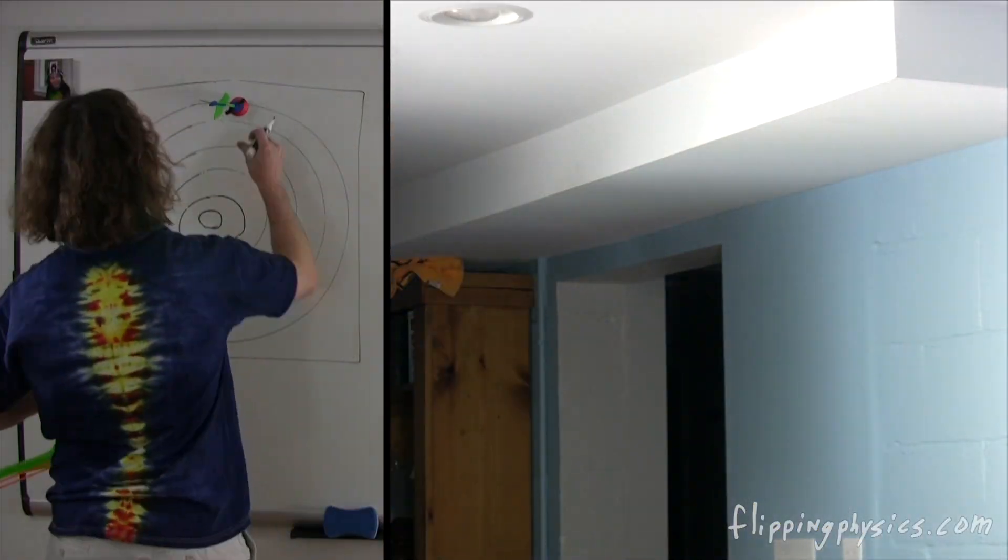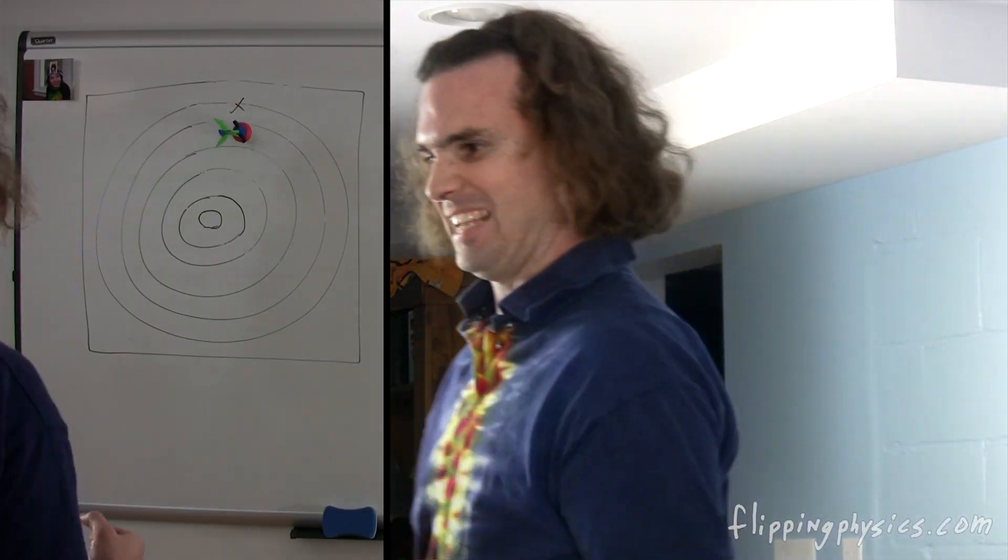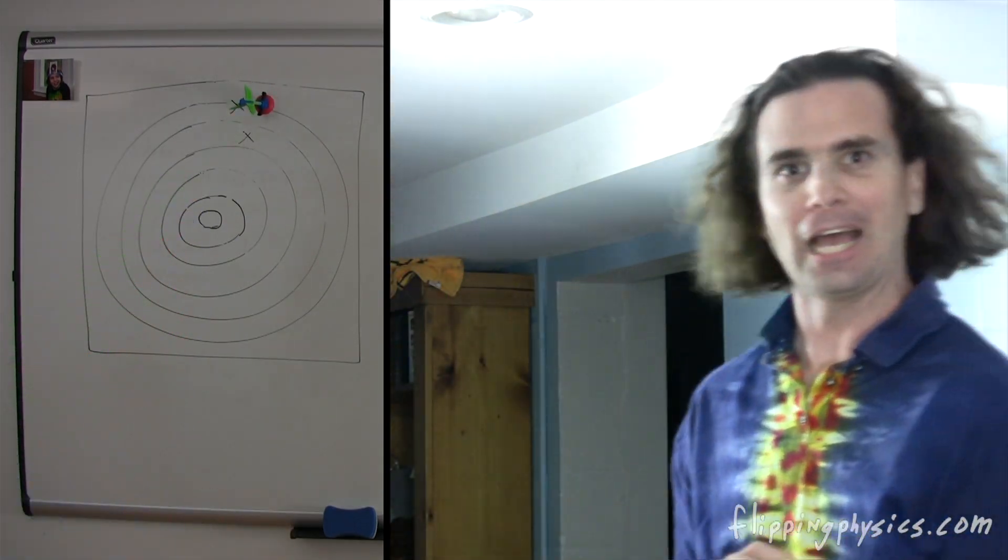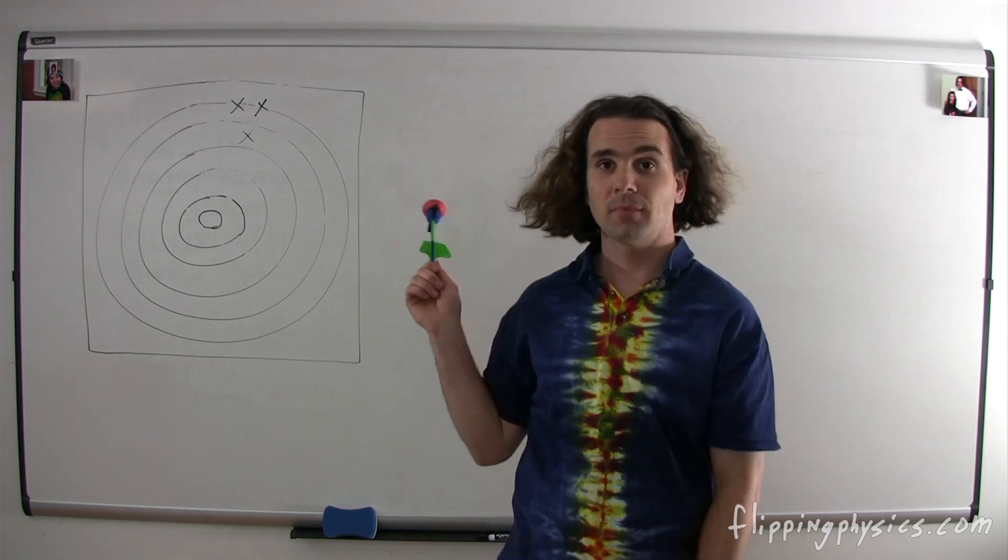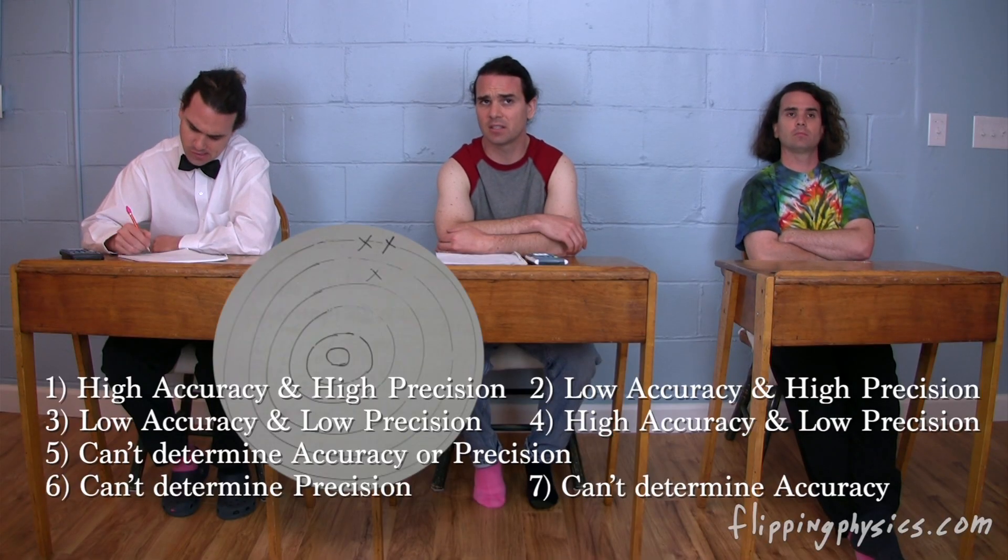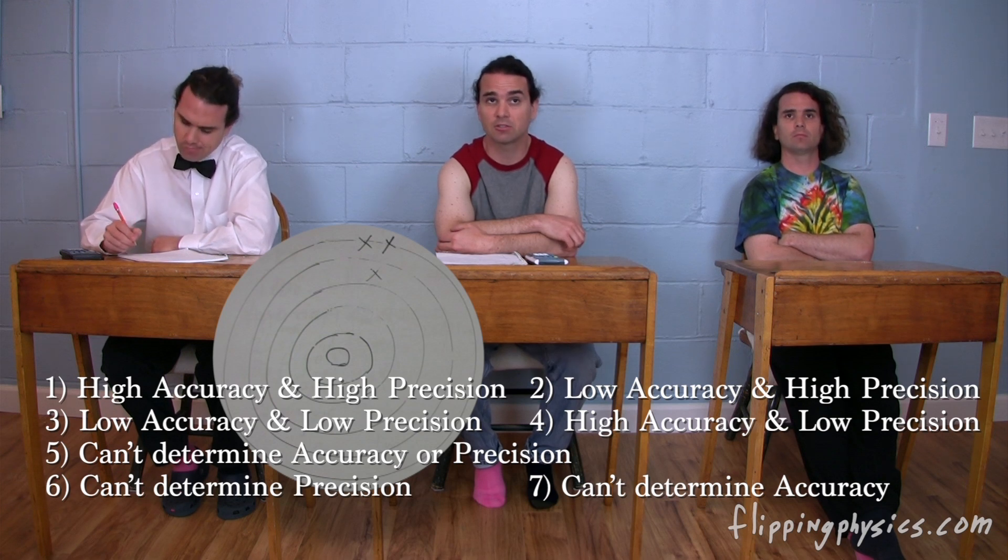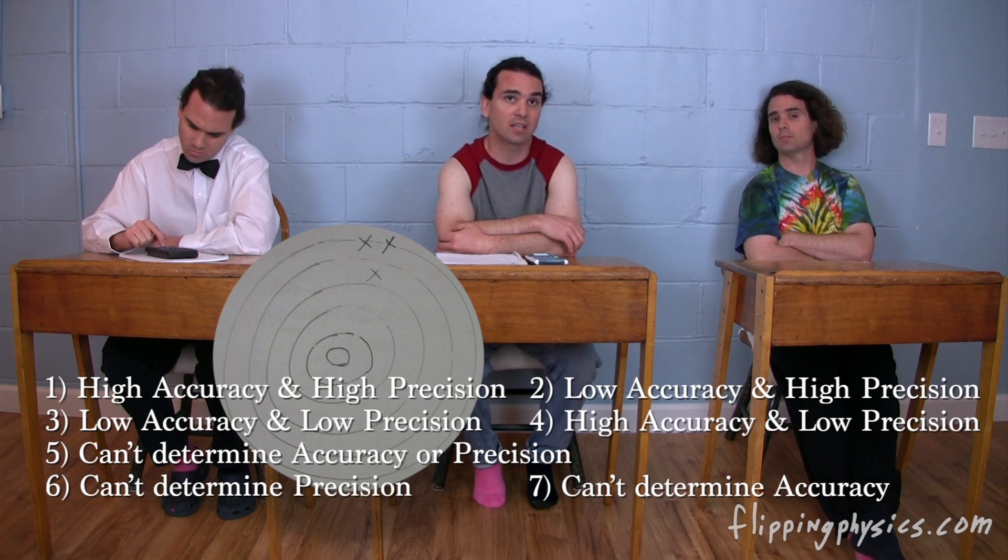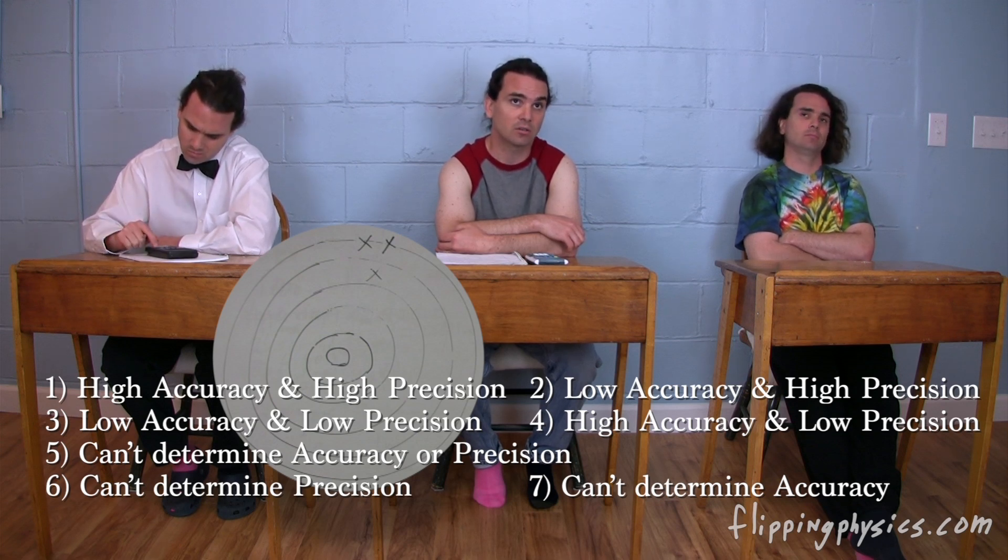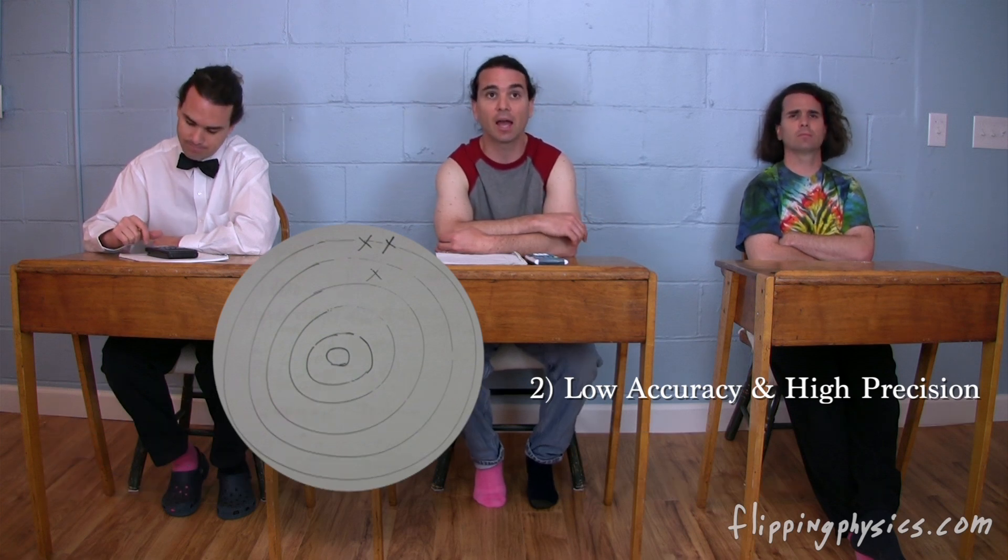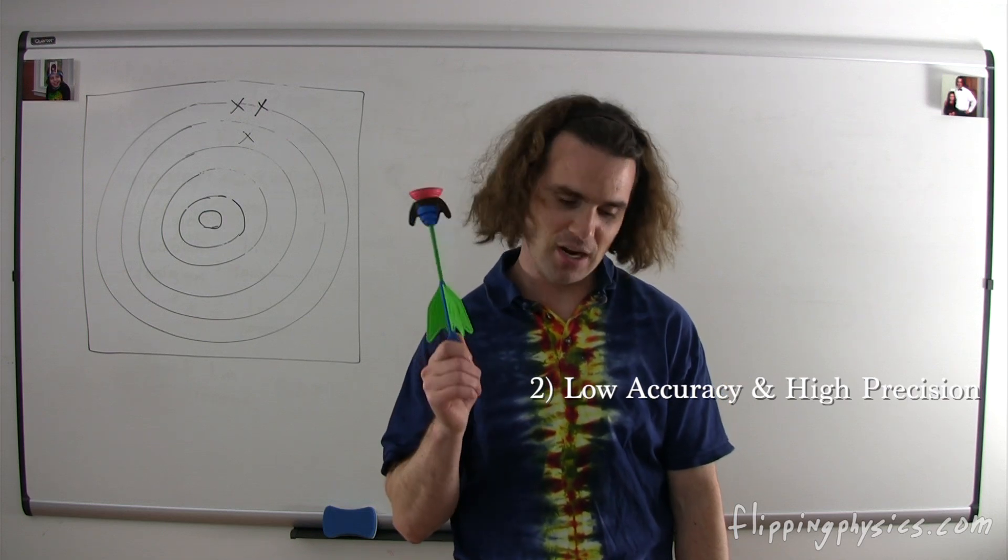Whoo! Yes! Yes! Whoo! Bobby, thoughts? Just like in the previous example, all the arrows are close to one another. So it's highly repeatable or highly precise. However, now all the arrows or measurements are not near the accepted value of the bullseye. So it's going to be low accuracy. So the answer is number two. Low accuracy but high precision. Also correct Bobby. Let's do another one.